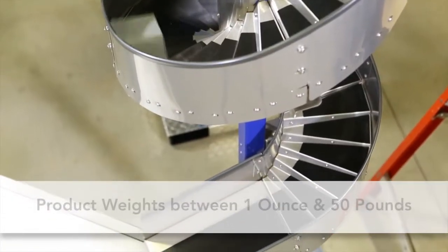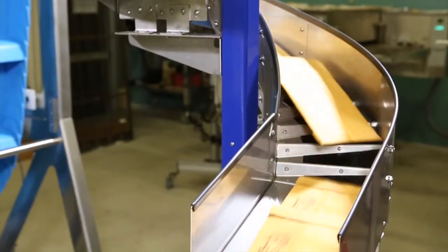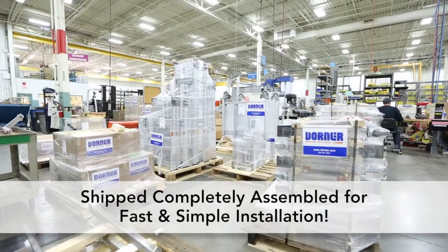Products can be as short as 3 inches and weigh anywhere from 1 ounce to 50 pounds. For speed and ease of installation, custom spiral chutes arrive at your facility completely assembled.